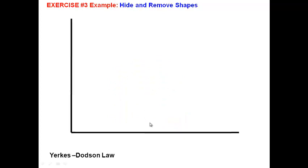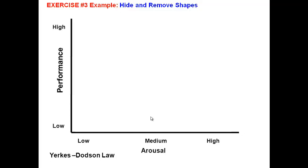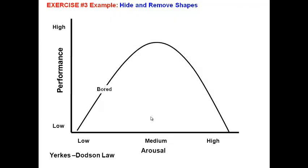As an illustration: when I click, the x-axis appears, then the y-axis appears and information about the y-axis appears. Then an arc is drawn, and when I click again, it is showing a particular part of the arc. So this actually appears as if I am drawing by hand, but I have done only hiding and removing the shapes. We will see how to do this in PowerPoint.